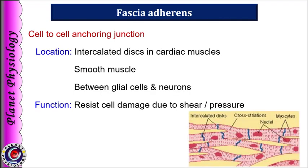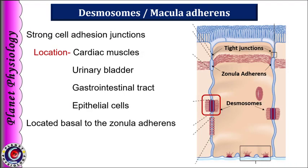The next junction is fascia adherens — an intercellular adhesive junction found in non-epithelial cells like intercalated discs of cardiac muscles, smooth muscles, and between glial cells and neurons. They resist cell damage due to shear or pressure. Desmosomes, or macular adherens, are specialized structures for cell-to-cell adhesion, randomly arranged on the lateral sides of the cell membrane. They are very strong and are abundant in tissues subjected to intense mechanical stress like cardiac muscles, urinary bladder, GI tract, and epithelial cells. They are present basal to zonula adherens. This diagram shows tight junctions near the apical margin, then zonula adherens, and then desmosomes.